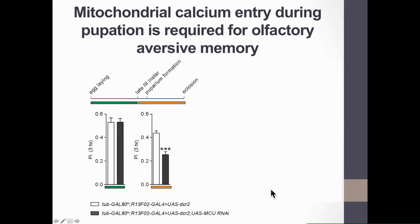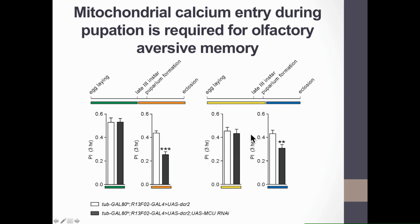We then wanted to further define the developmental time window in which mitochondrial calcium entry is required for memory in adult flies. We synchronized broods of flies and activated MCU silencing in specific developmental time windows shown by color bars. Silencing MCU from egg-laying up to late L3 larval stage didn't cause any defect in adult flies' memory, while silencing MCU from late L3 up to eclosure was sufficient to cause a three-hour memory decrease. By activating MCU expression after puparium formation, we further narrowed the critical developmental window to the stage of pupation.